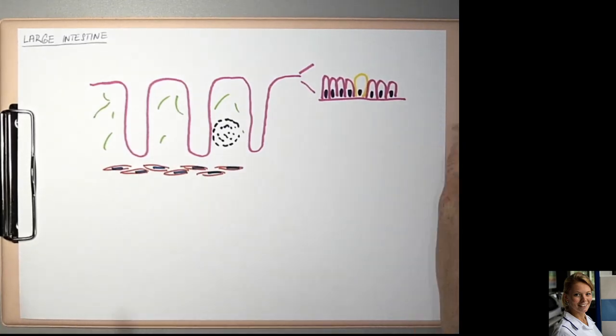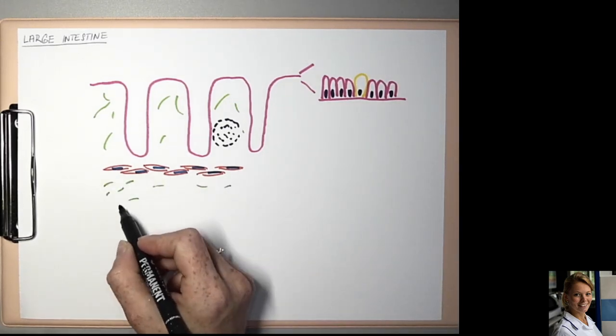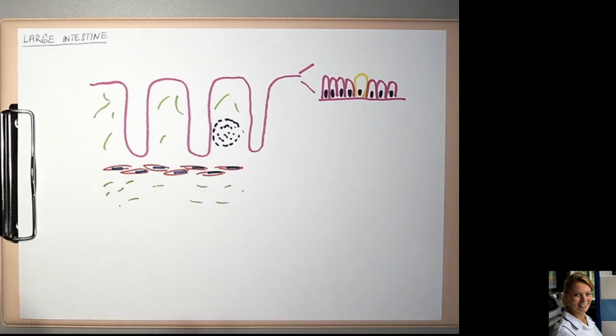So the next layer is the submucosa, also loose connective tissue with collagen fibers and blood vessels.